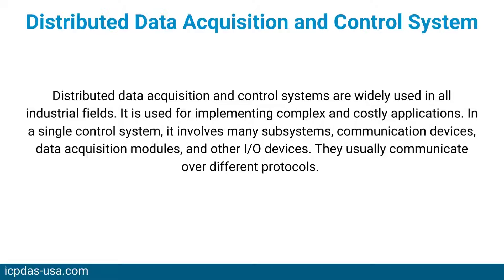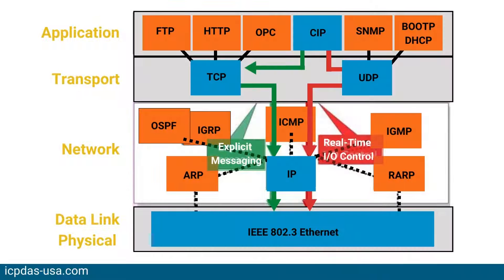These devices usually communicate over different protocols. Gateway or protocol converters are the key to translate elements between two protocols. Compared to traditional centralized SCADA systems, distributed data acquisition and control systems are able to reduce the cost and time of troubleshooting or maintenance.